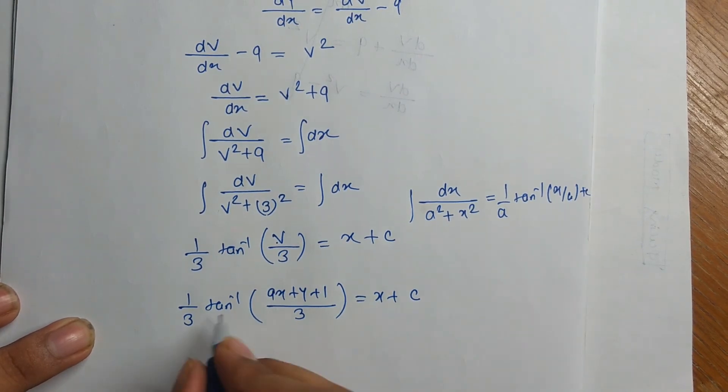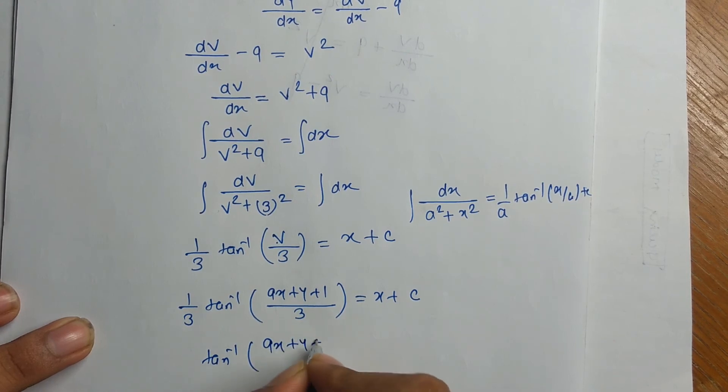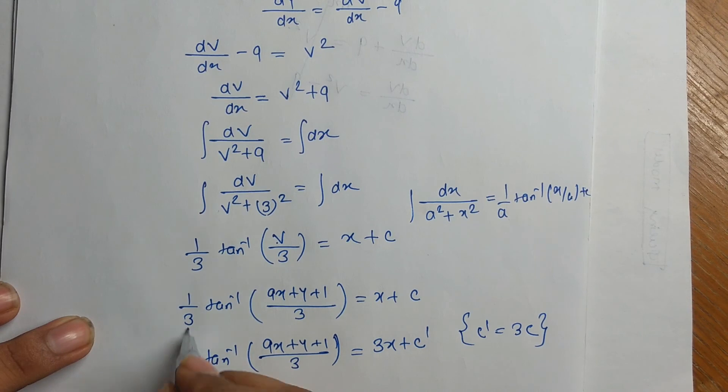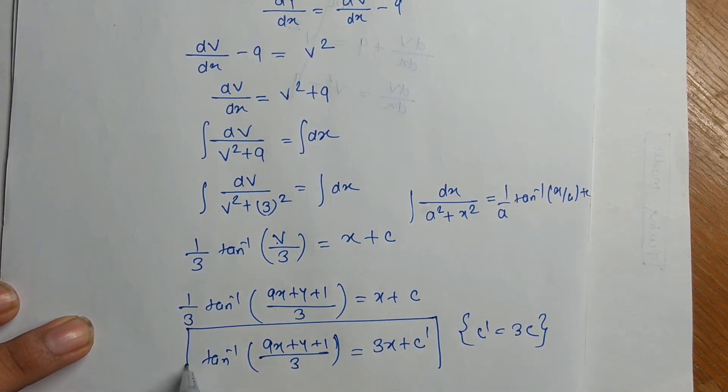We have to move 3 on this side. That equation becomes tan inverse of 9x plus y plus 1 divided by 3 equal to 3x plus c dash. And c dash equal to 3c. Because it is a constant, you can multiply, divide by any number. It remains constant. This is your final answer.